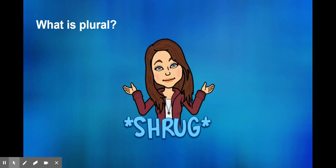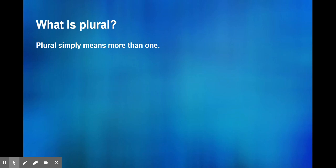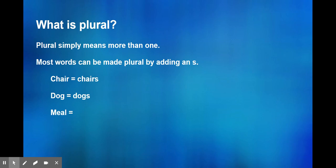What is a plural? It's just more than one. Most words can be made plural by adding an S. Chair is chairs, dog is dogs, meal is meals.